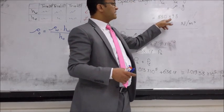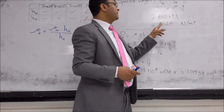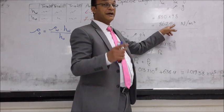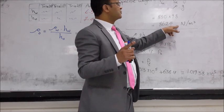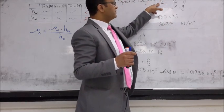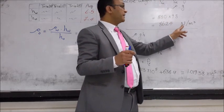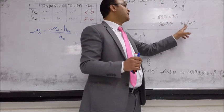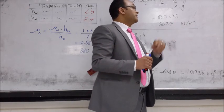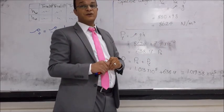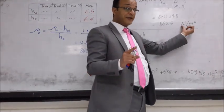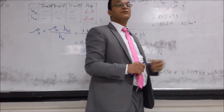880 times 9.8 equals 8624. And the unit, since we divide weight over volume, the unit of weight which is a force will be measured in Newton, and the unit of volume which is cubic meter. So the measuring unit for specific weight is Newton per cubic meter.